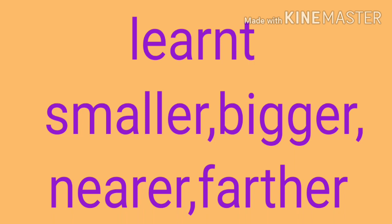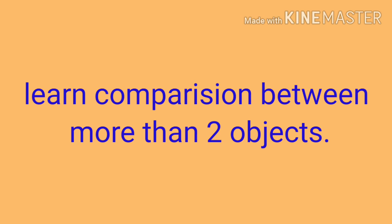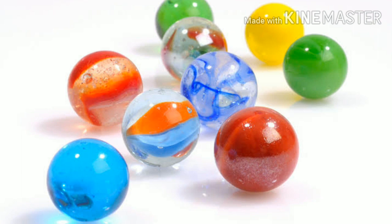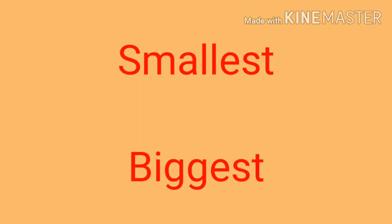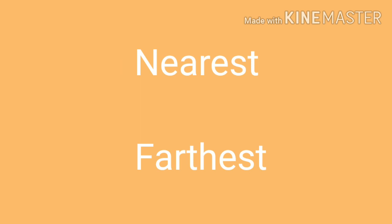Now, in today's class we will compare more than two objects — it can be 3, 4, 5, 6, but more than two. Children, whenever we compare more than two objects according to size, we use the words biggest and smallest. And whenever we compare more than two objects according to distance, we use the words nearest and farthest.